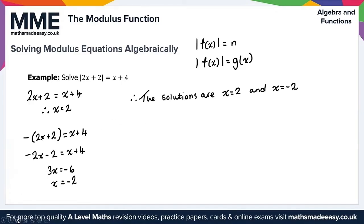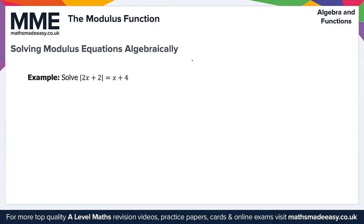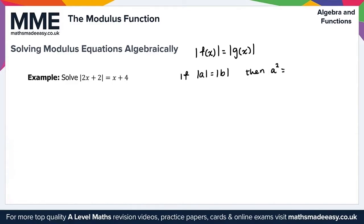For equations of the form |f(x)| = |g(x)|, it is easier to use the algebraic rule that if |a| = |b| then a squared equals b squared. So if |f(x)| = |g(x)|, we can write (f(x))² = (g(x))².